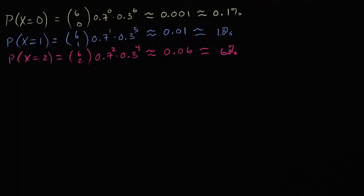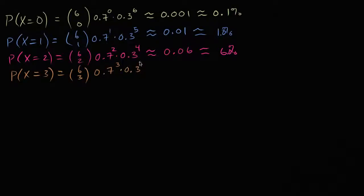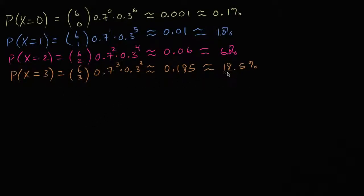The probability that our random variable is equal to three is going to be six choose three, times 0.7 to the third power, times 0.3 to the third power, which is approximately equal to 0.185, or 18.5%. That's definitely within the realm of possibility — it's starting to be a non-insignificant probability.